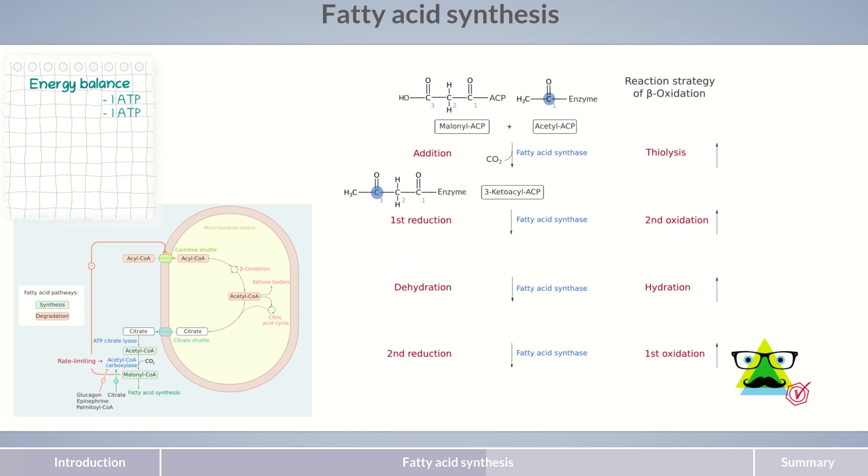This explains how palmitic acid, with its 16 carbon atoms, can be one of the main products of fatty acid synthesis. To synthesize a fatty acid with an odd number of carbon atoms, propionyl-CoA is used instead of acetyl-CoA as the starting molecule. By the way, propionyl-CoA is also the last unit remaining in the breakdown of odd-numbered fatty acids.